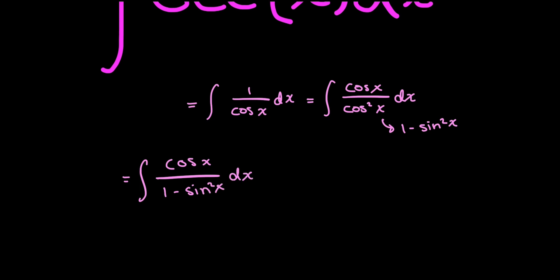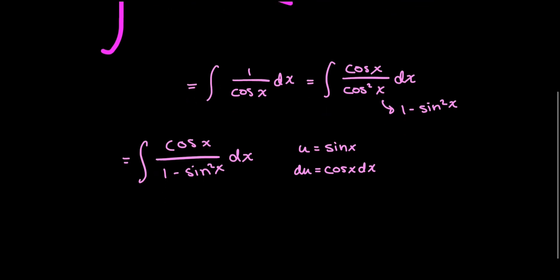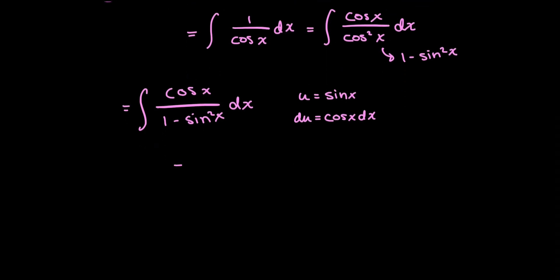And now I can see that I have a function and its derivative within the integral. I have sine x and cosine x, which means I can do some substitution. So u is equal to sine x and du is equal to cosine x dx. So now I could rewrite my integral in terms of u. So this becomes 1 over 1 minus u squared du.